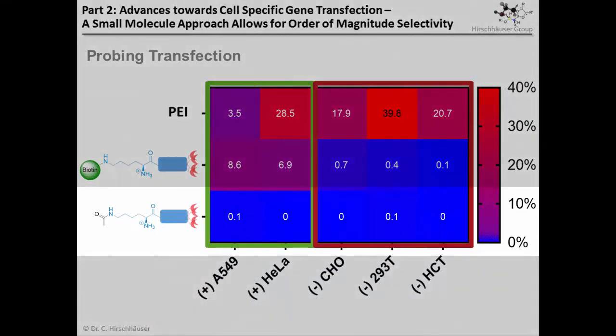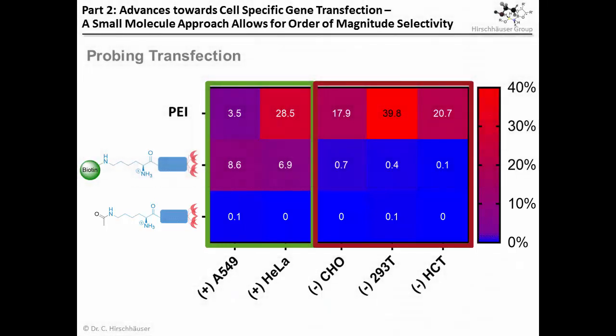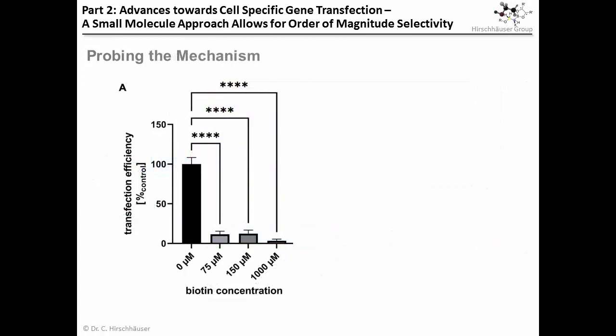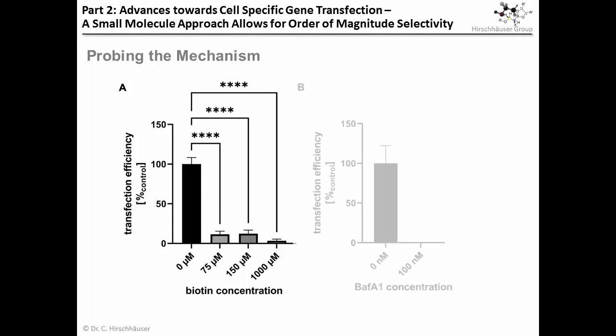Supported by the fact that our control vector, which lacked the biotin moiety entirely, wasn't able to transfect anything very well, it became quite clear that the biotin label must play a pivotal role in the transfection process of our vector. This was further confirmed by an experiment in which transfection of HeLa cells was quenched in a concentration-dependent manner upon addition of a competing biotin ligand. Transfection could also be quenched by addition of bafilomycin, which is known to interfere with endosomal escape. These observations thus point to a biotin receptor-dependent endocytotic transfection mechanism for our vector system.